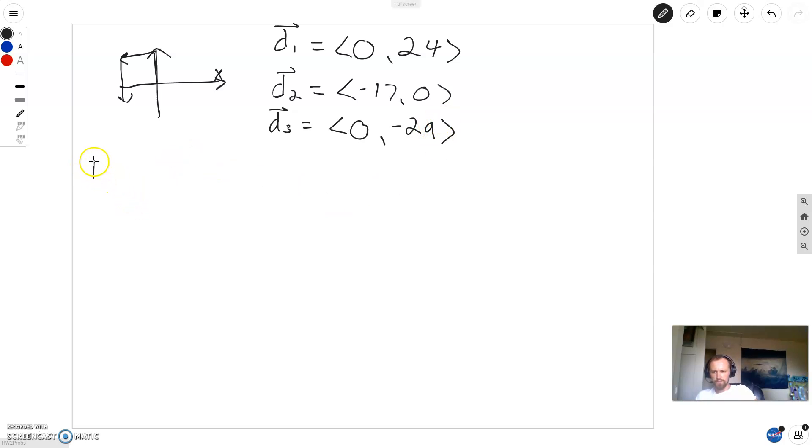So then the total displacement vector, and the total displacement vector is this, so I should expect that I get negative x and negative y coordinates equals 0 plus negative 17 plus 0 is negative 17, and 24 plus negative 29 is negative 5.